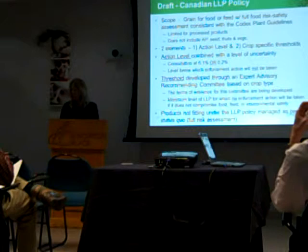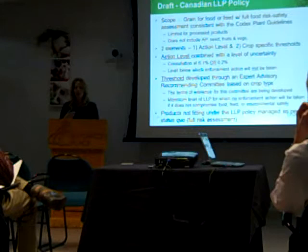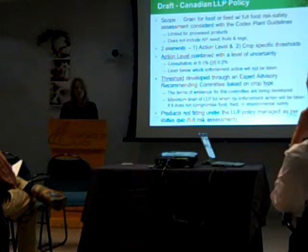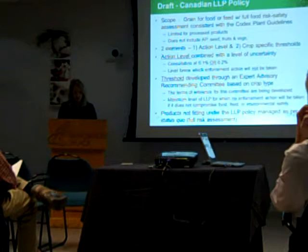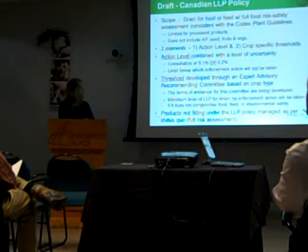Here's a little bit about it for people who haven't already read it. The scope is grain for food and feed. The grain needs to have a full risk safety assessment consistent with the Codex Plant Guidelines. Canada also has to be ensured that the country that's done this risk assessment is following the guidelines and it's consistent with the risk assessment Canada would do. It has some limited content for processed products — processed products will be looked at indirectly, taken back to the grain, because as you treat the grain in a processed product, you can either concentrate or dilute the level.